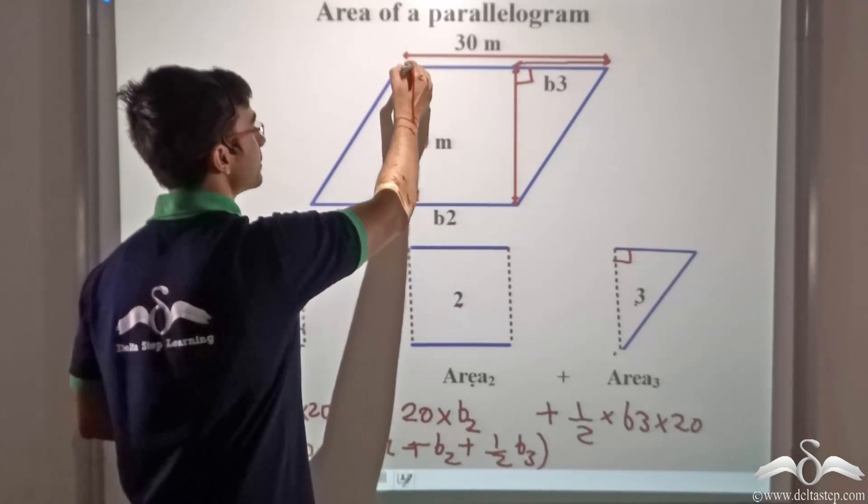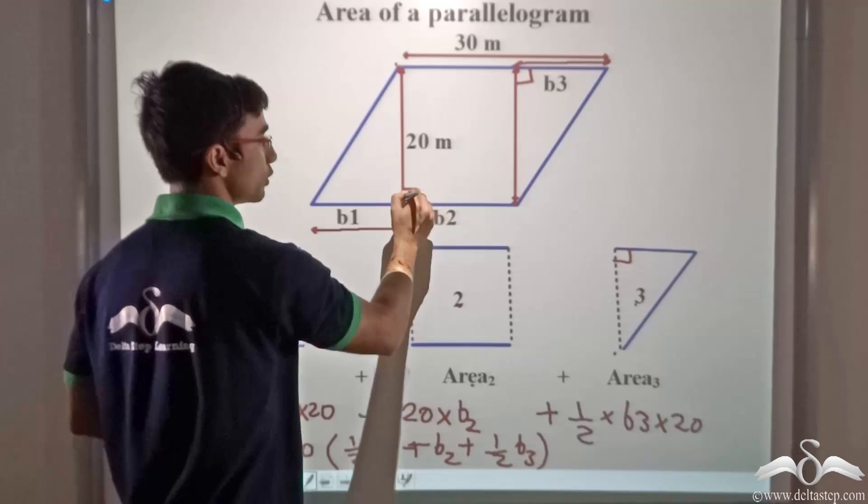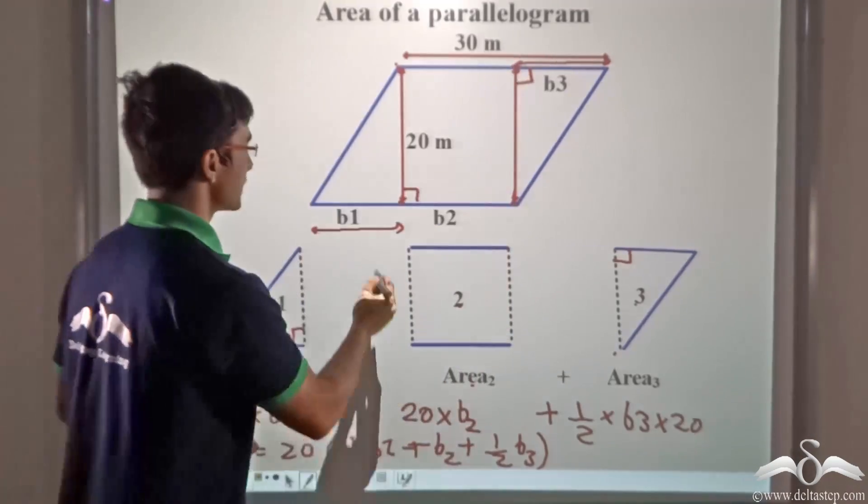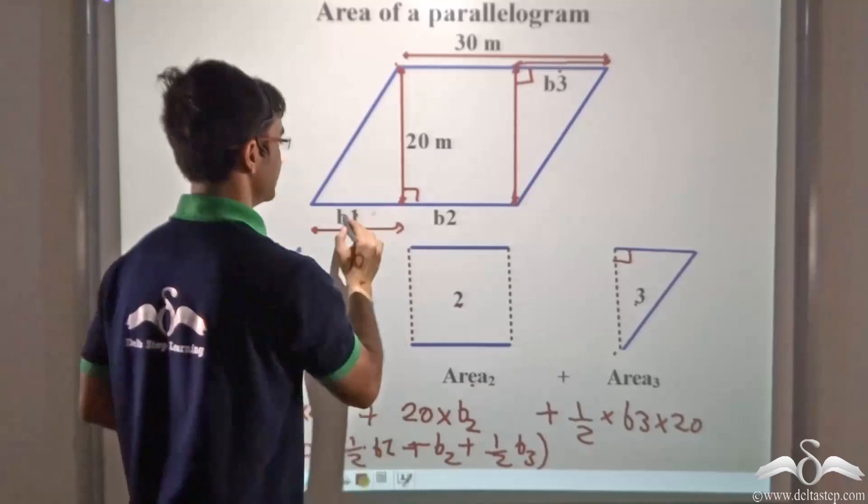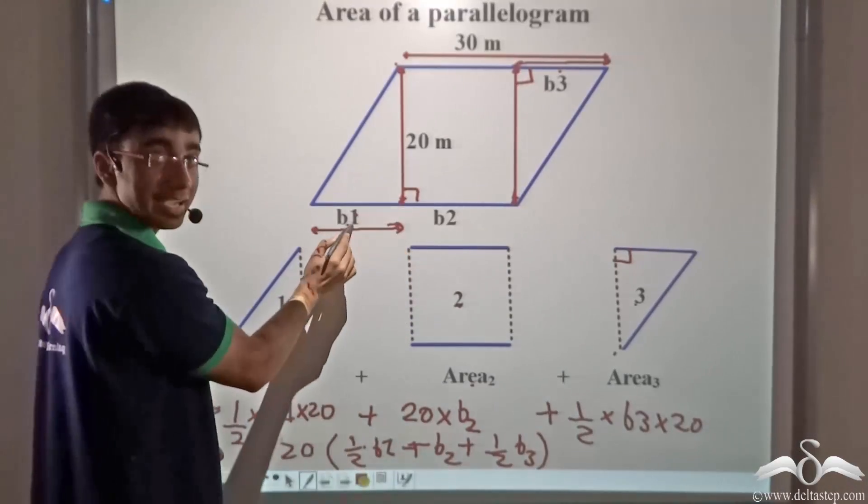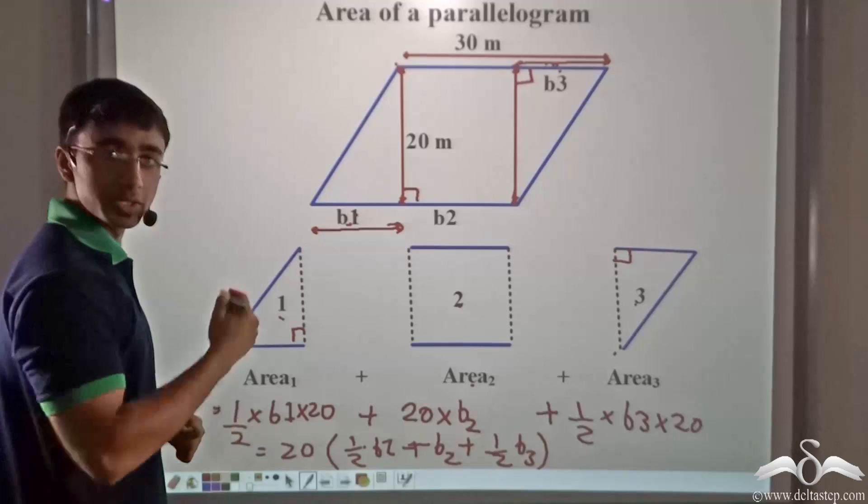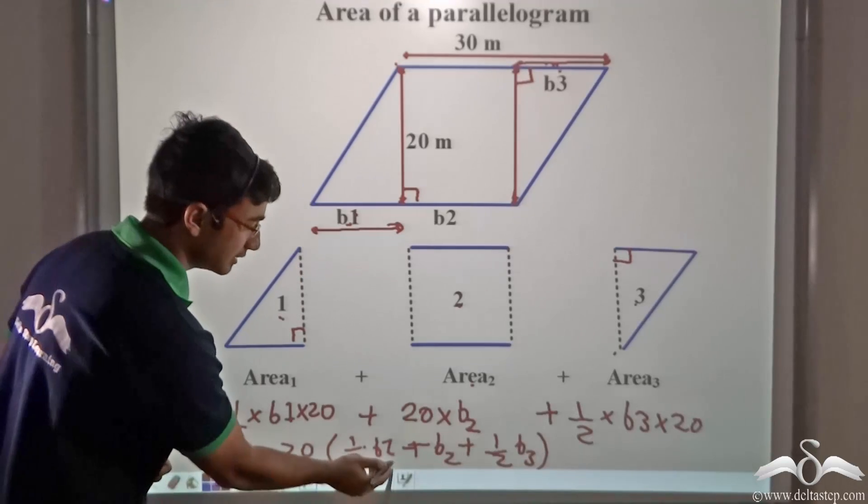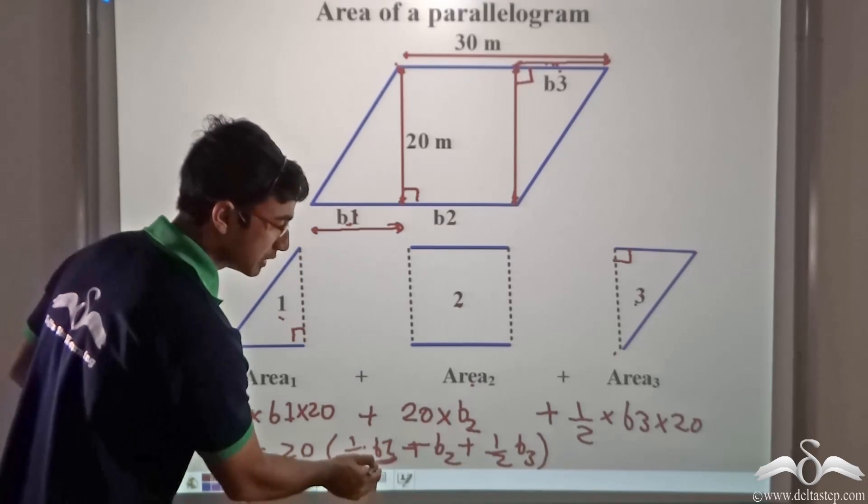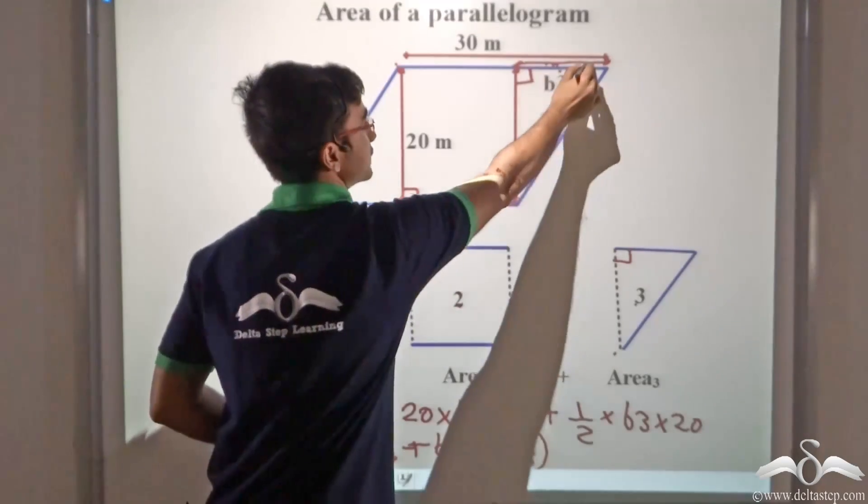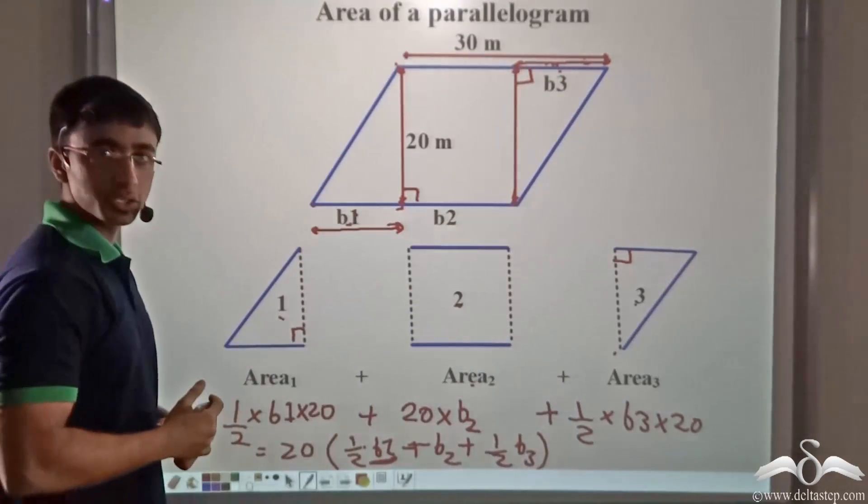So when I am considering dropping a perpendicular from this point as well as dropping a perpendicular from this point, these two sides that is B1 this segment and B3 this particular segment will be equal. So this will give me half B1 plus half B3 that is half of this plus half of this as one particular value.